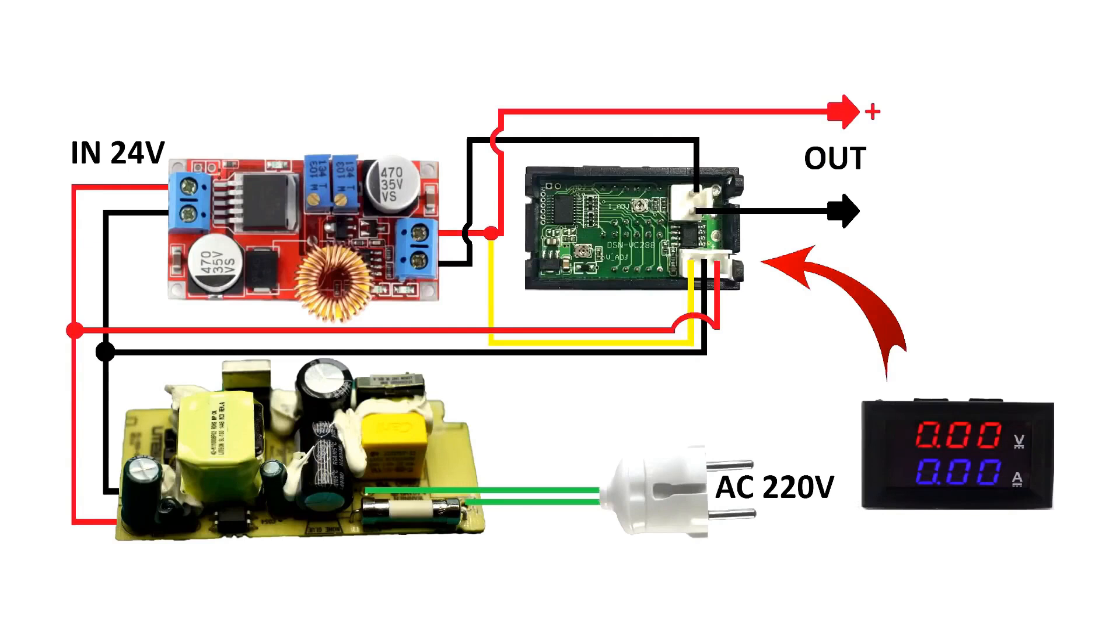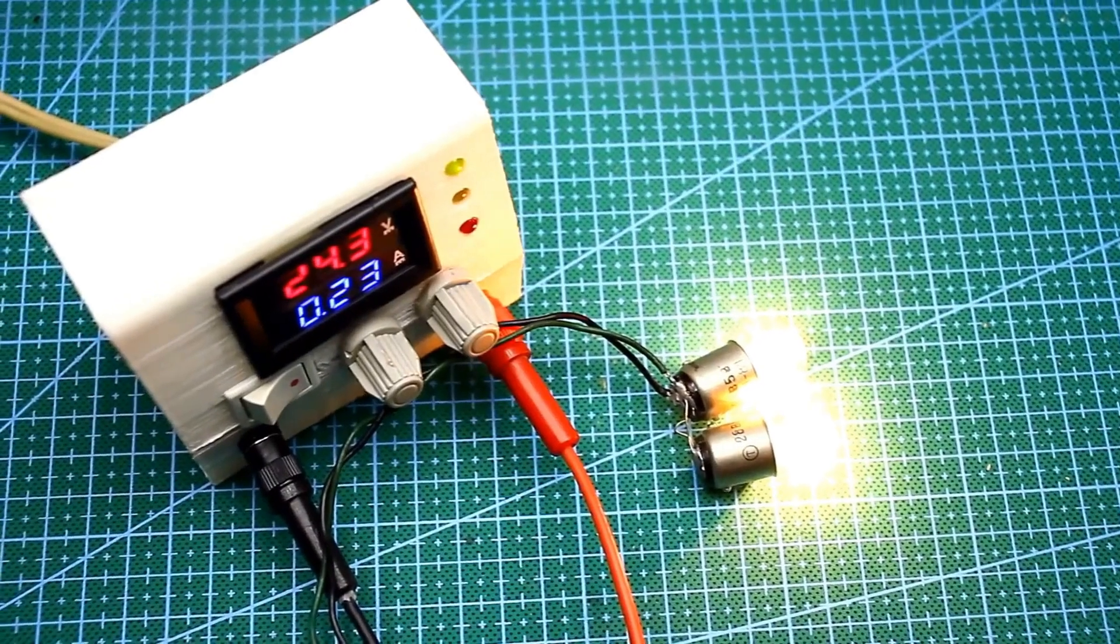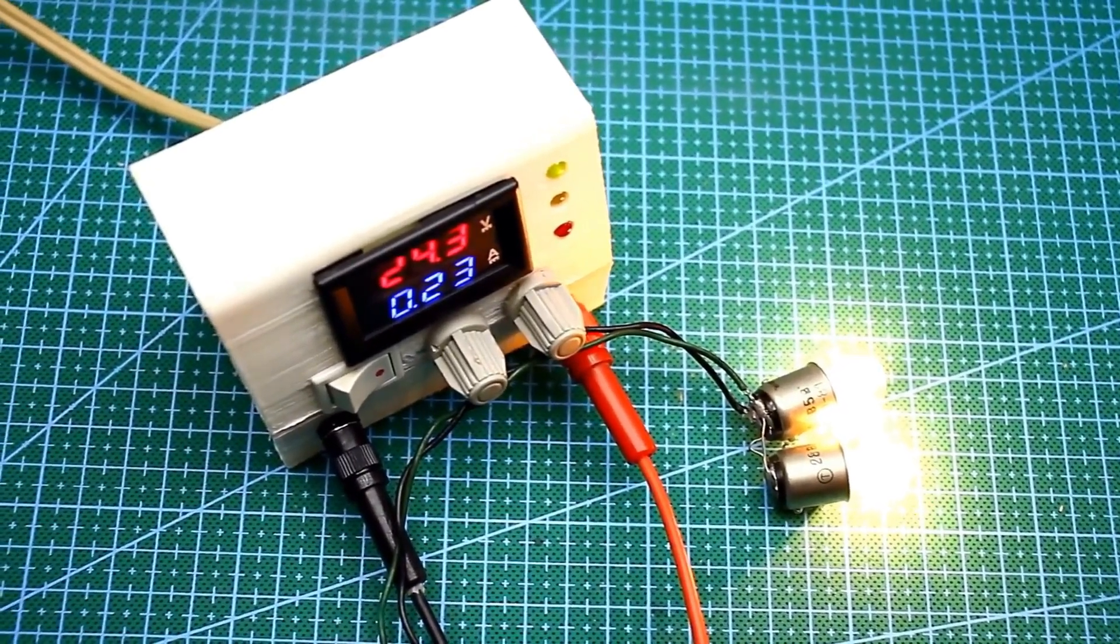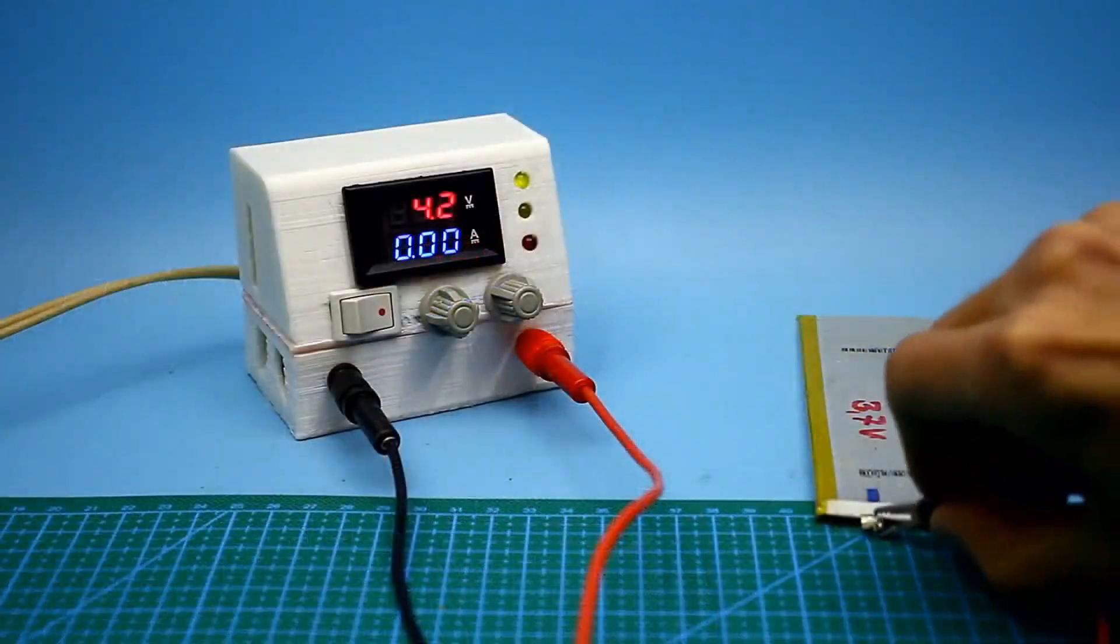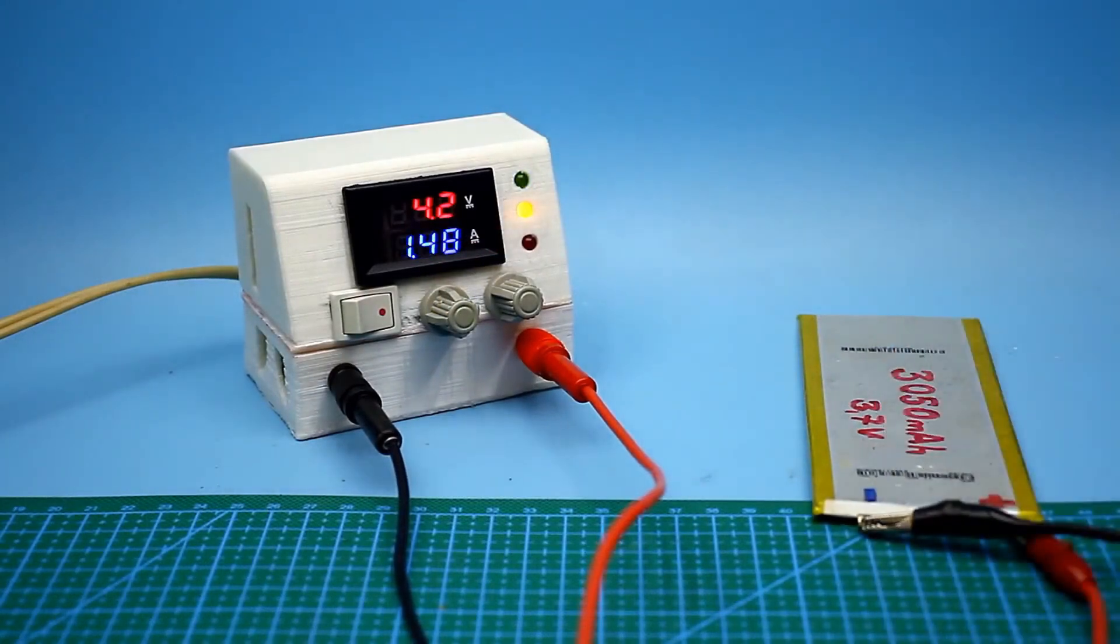The block diagram is now in front of you. It's important to note that this is a stabilized power supply for both voltage and current. That is, the set values of current and voltage will not change depending on the load and network voltage instability.